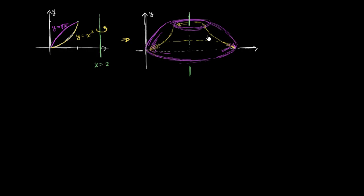Let's think about how we can figure out the volume. We're going to use the disk method — sometimes called the ring method — or more precisely the washer method for this one. Since we're rotating around a vertical line, it'll be really helpful to have a bunch of rings stacked up in the y direction, so we're probably going to want to integrate with respect to y.